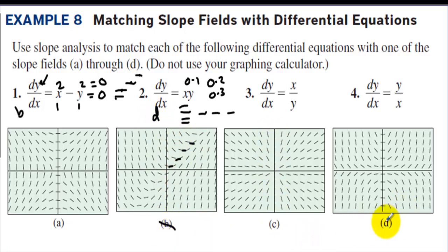So I have letter B and I have letter D. Let's take a look at x over y. When x is 0, in other words on the y-axis, we're going to have slopes of 0 when x is 0. And when y is 0, in other words on the x-axis, we should have vertical slopes. And that looks like letter A. So this one must be letter A.